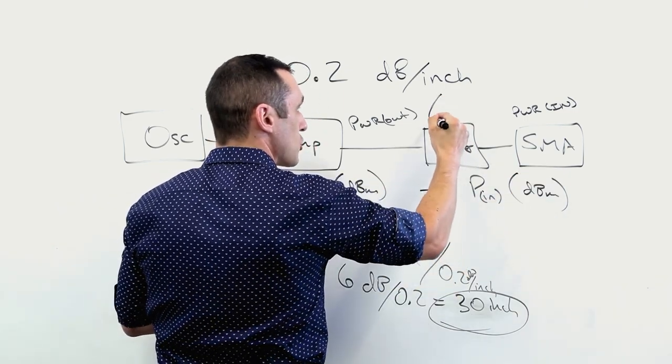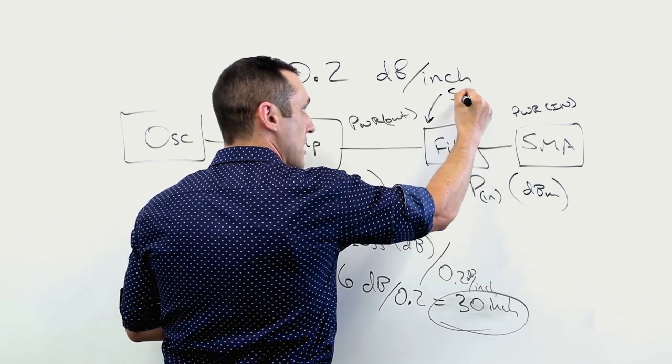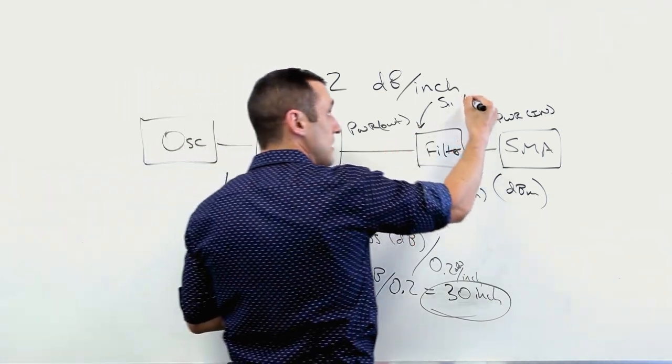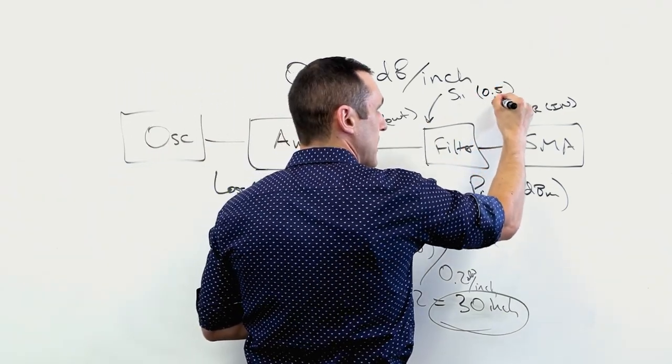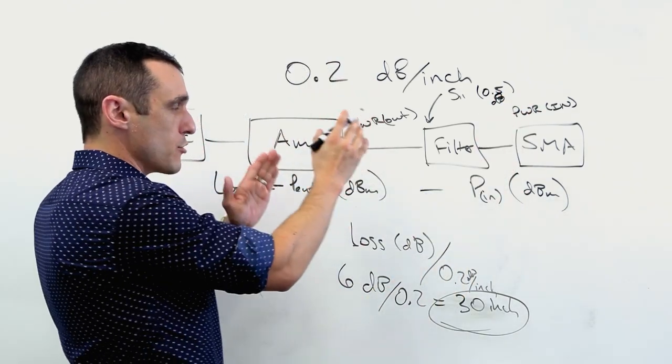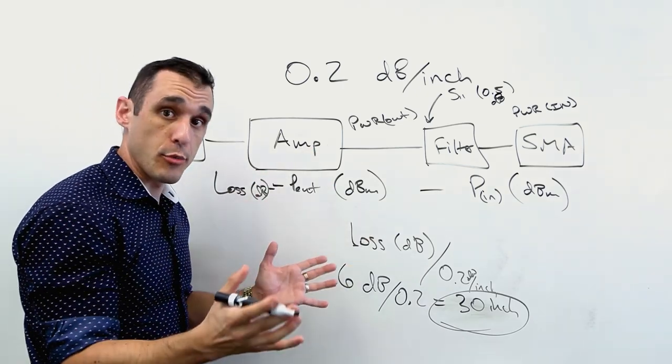Now of course, there's going to be additional losses here from the input on this filter. There could be some S11 loss. For some filters that are matched to 50 ohms, that could be like maybe a half a decibel or something like this. That's a typical value that you might see. So make sure that you account for all of this because that's going to limit how big you can actually make your board.